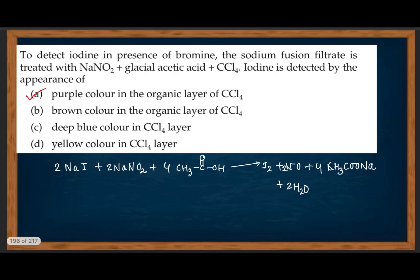To detect iodine in the presence of bromine, the sodium fusion filtrate is treated with NaNO₂ plus glacial acetic acid plus CCl₄. Iodine is detected by the appearance of a purple color in the organic layer of CCl₄. This is a very important practical question.